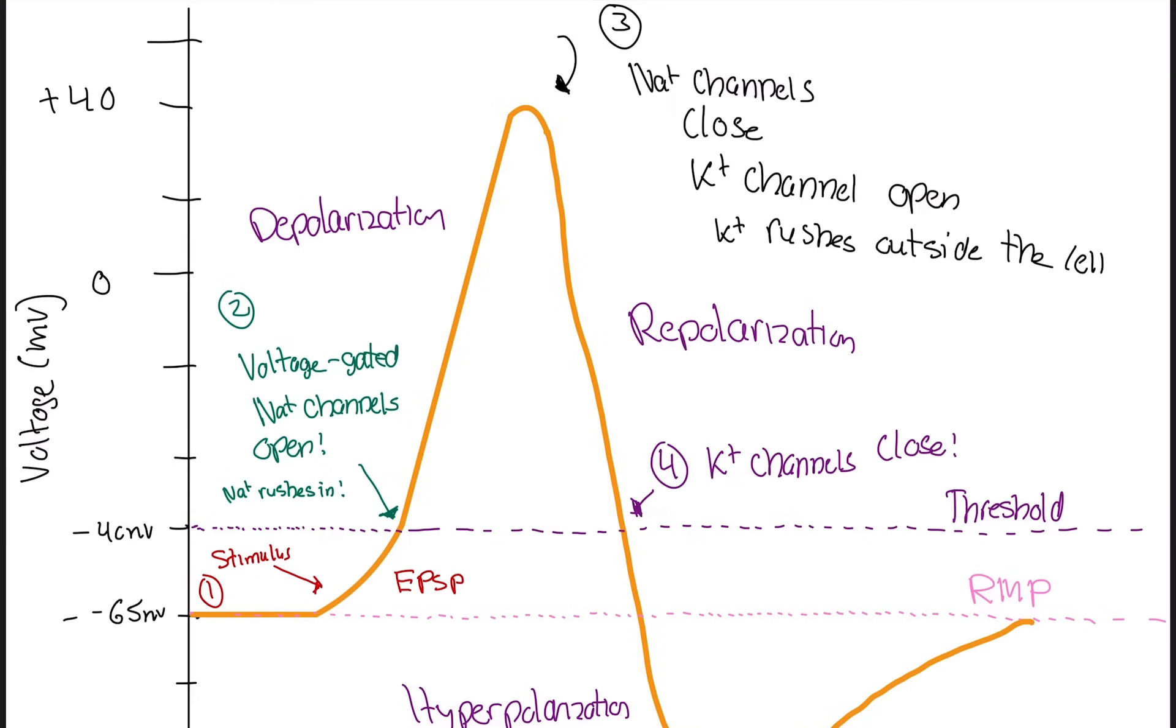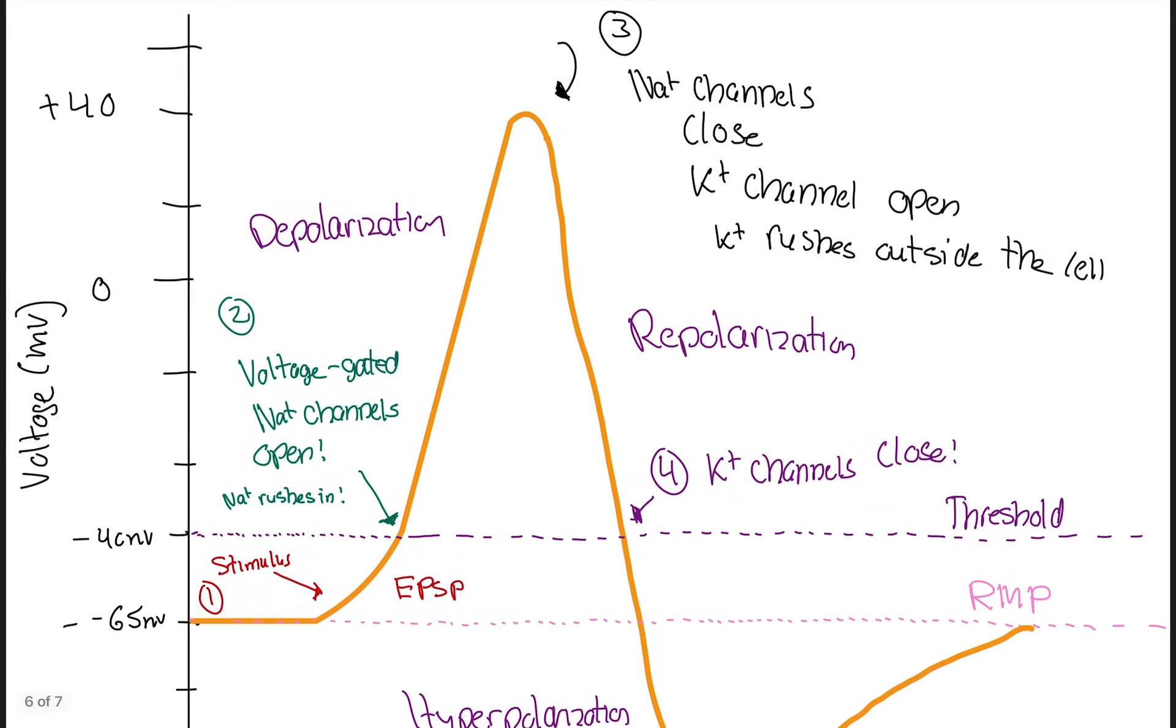So now there are two more things you need to know. There's something called the absolute refractory period and the relative refractory period. So this is going to be an imaginary line, but this is really how it is. I shouldn't say it's imaginary, but from the peak all the way to resting membrane potential. So this area right here is called the absolute refractory period.